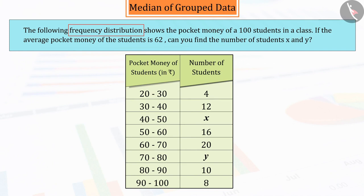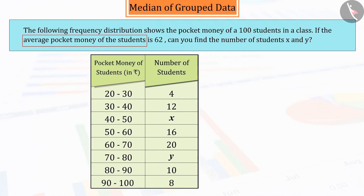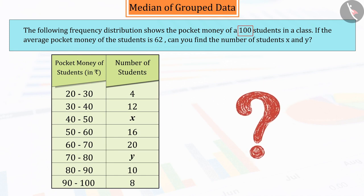The following frequency distribution shows the pocket money of 100 students in a class. If the average pocket money of the students is 62, can you find the number of students x and y?